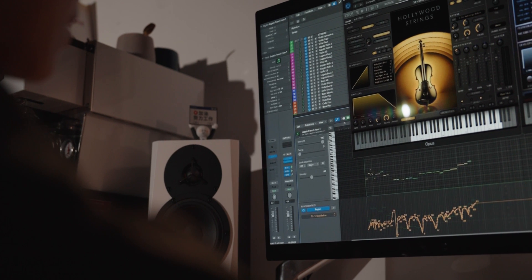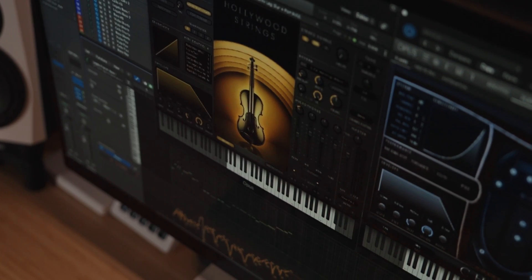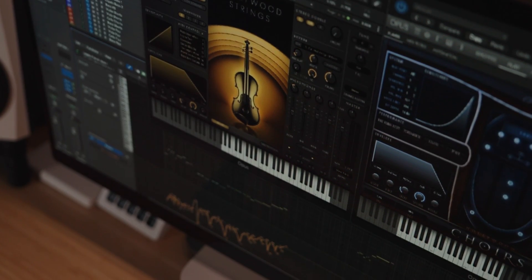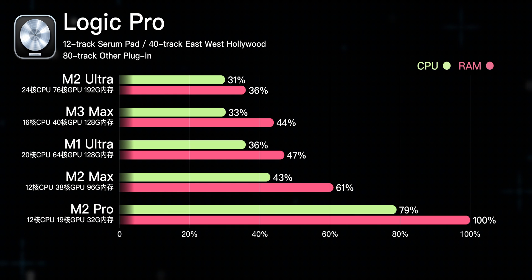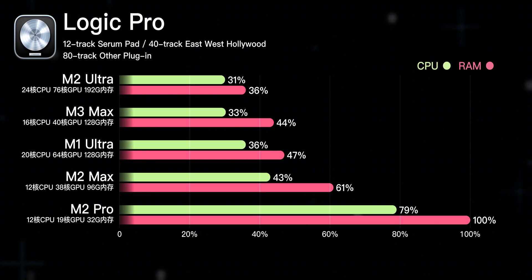We then replaced 40 tracks of strings and winds with East-West Hollywood samples. M2 Ultra used 31% CPU and 36% memory; M1 Ultra used 33% CPU and 44% memory; M3 Max used 36% CPU and 47% memory; M2 Max used 43% CPU and 61% memory; M2 Pro used 79% CPU and 100% memory. At this point, the Mac Mini with M2 Pro was maxed out, while the other four Macs could play and operate in real-time normally.